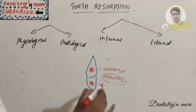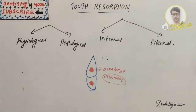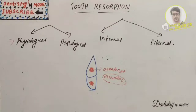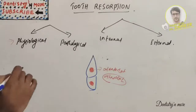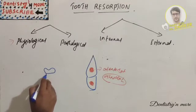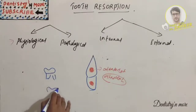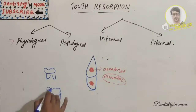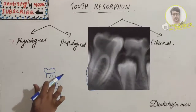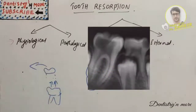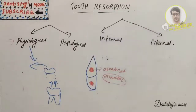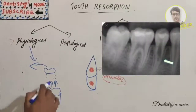Tooth resorption can be of two types: physiological and pathological. Physiological tooth resorption is what we know very well — tooth eruption. The deciduous teeth are resorbed once the permanent tooth erupts. The deciduous root is automatically resorbed and the tooth is exfoliated — that is physiological resorption.